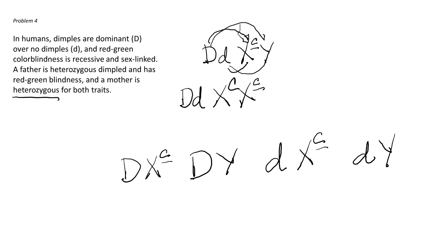The mom is also going to have every possible combination of D with X, so she would have a big D with a normal vision allele on her X chromosome. She could have a big D with the lowercase allele for red-green colorblindness. Or she could have a recessive allele for dimples with the normal vision allele on her X chromosome, and she could have the non-dimpled allele with the red-green colorblindness allele.